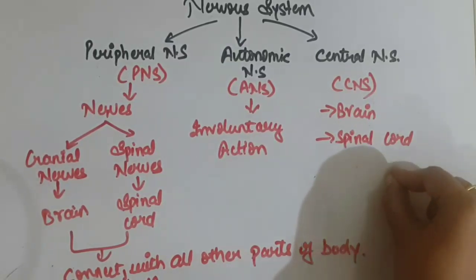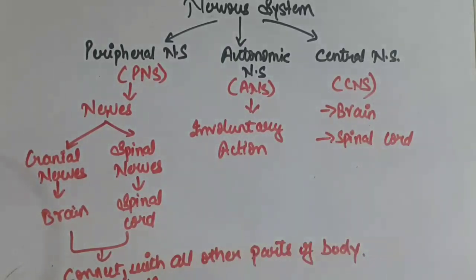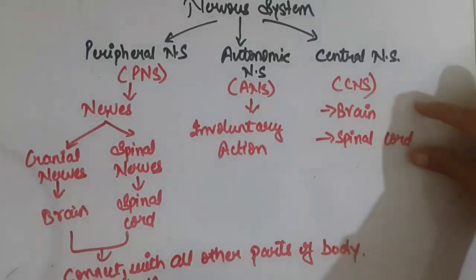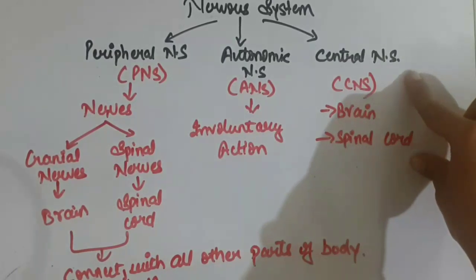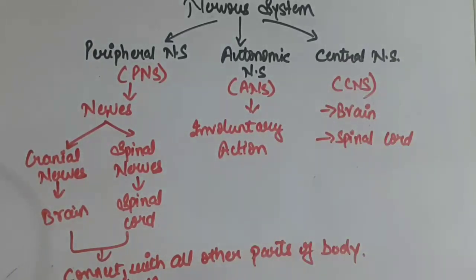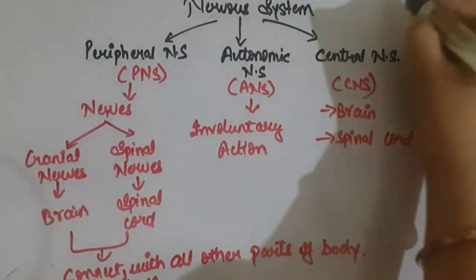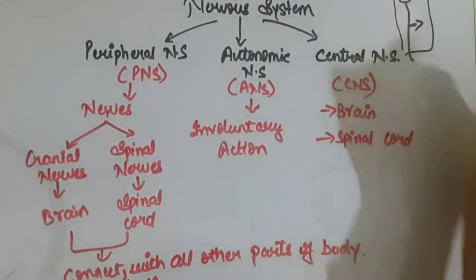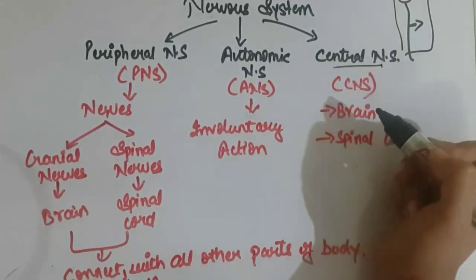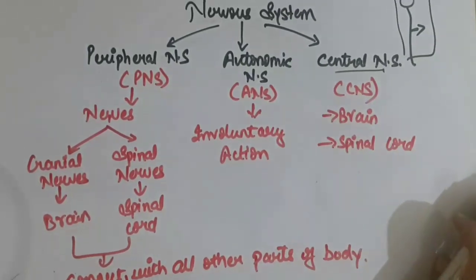As discussed in our previous video on reflex action and reflex arc, the brain is responsible for analyzing, and the spinal cord and spinal nerves are responsible for responding. These two major organs — the brain and spinal cord — come under the central nervous system, as they form the central part of your body. Just below the brain is the spinal cord.